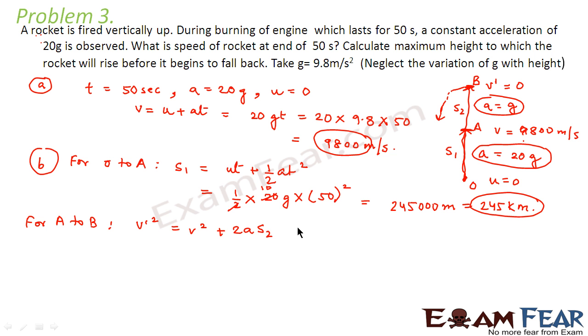So in this we find that V dash is equal to 0. So we can say this is 0. What is V square? That is 9800 whole square plus 2 into A is G into S2.